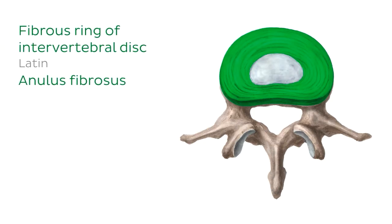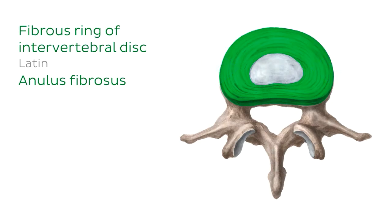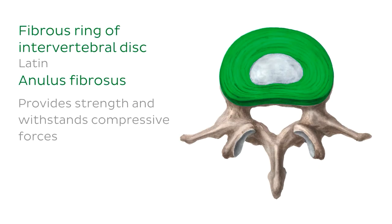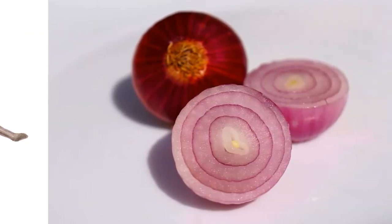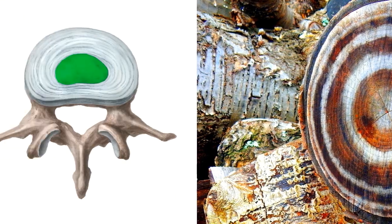The annulus fibrosus is the outer fibrous ring of the intervertebral disc. It's made up of a series of 15 to 25 concentric layers, or lamellae, with collagen fibres lying parallel within each lamella. Elastin fibres lie between the lamellae, possibly helping the disc to return to its original arrangement following flexion or extension. The annulus fibrosus is relatively stiff, providing strength and withstanding compressive forces.